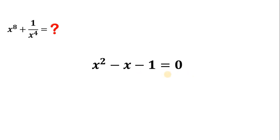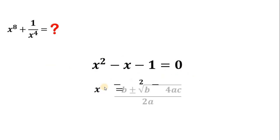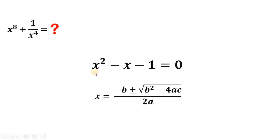First, we need to solve for the value of x. Using the quadratic formula: x equals negative b plus or minus square root of b squared minus 4ac, over 2a. On the given quadratic equation, a is the coefficient of x squared, which is 1, so we can replace all a with 1.